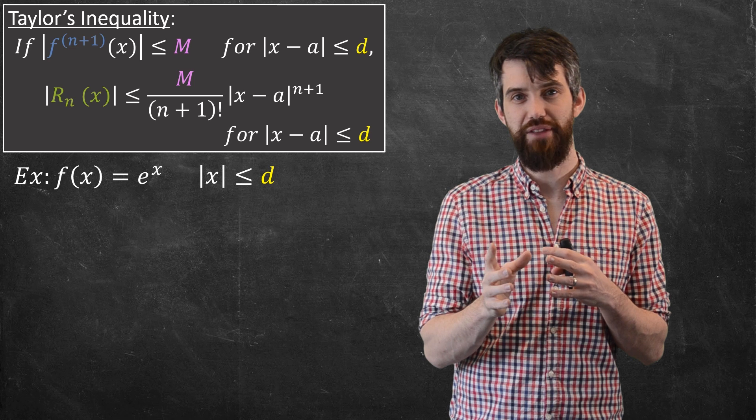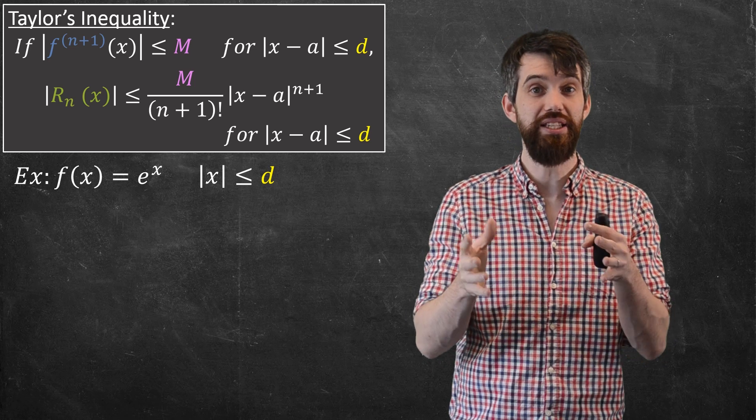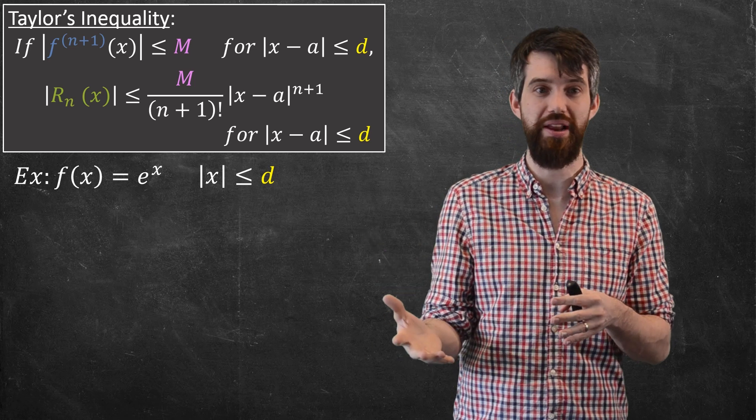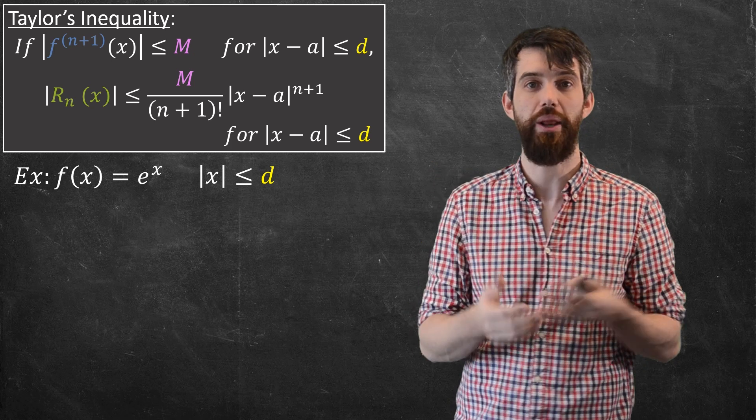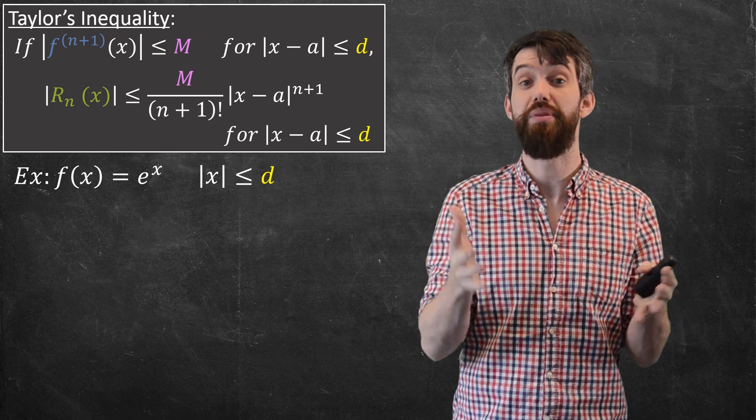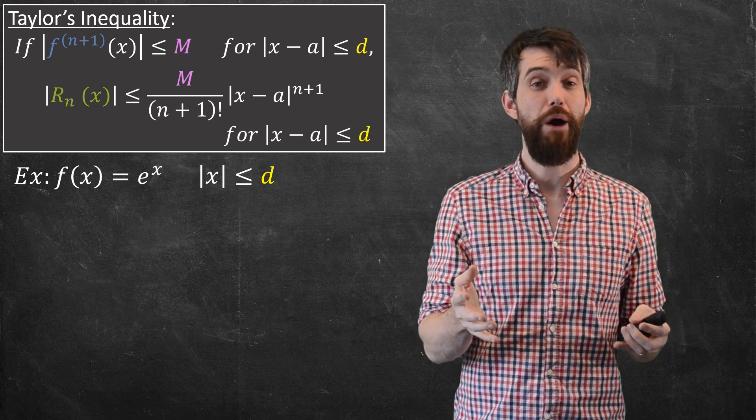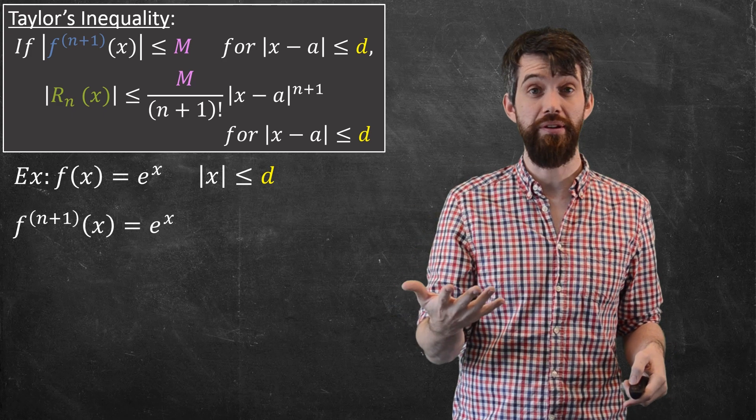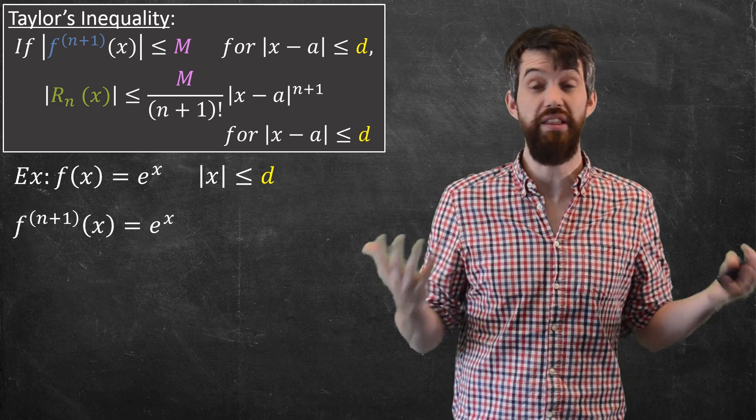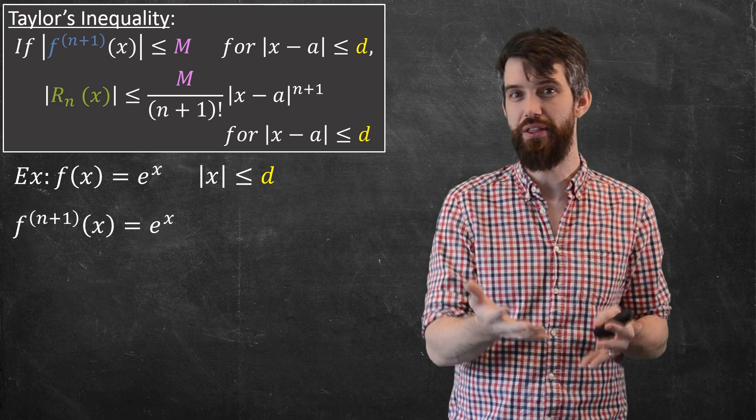Now, I'm going to restrict myself to this situation where the |x| is less than d in terms of its magnitude. So I'm considering some region as the Taylor's inequality asked us to do. We look at it for some particular region. Okay. Now, if I take (n+1) derivatives of e^x, I just get right back to e^x. You can take as many as you wish. Always e^x.